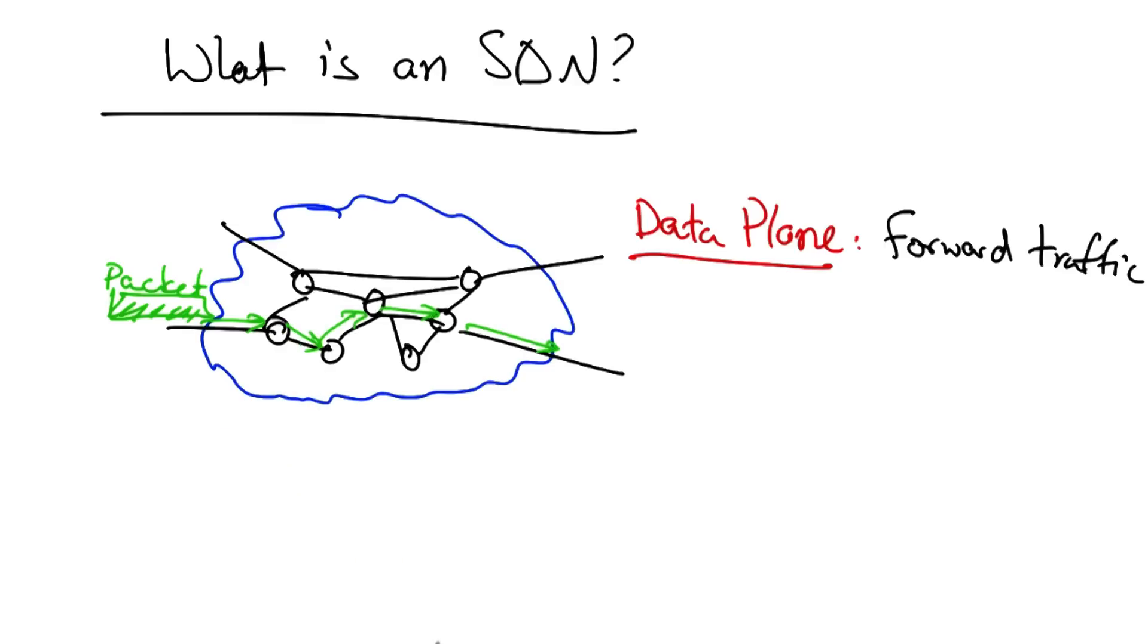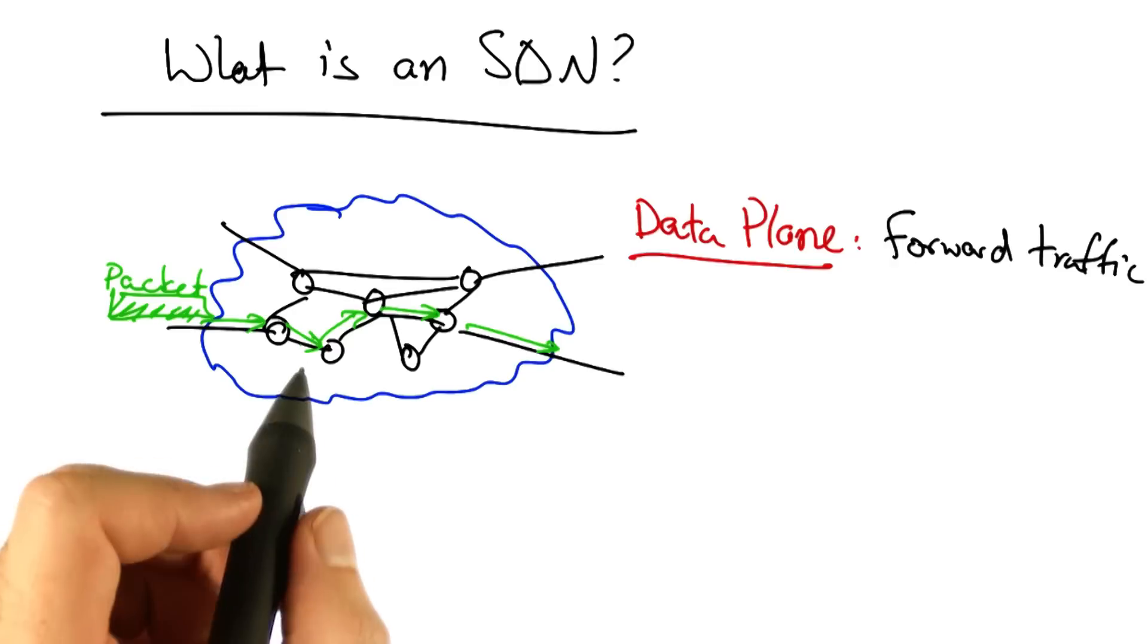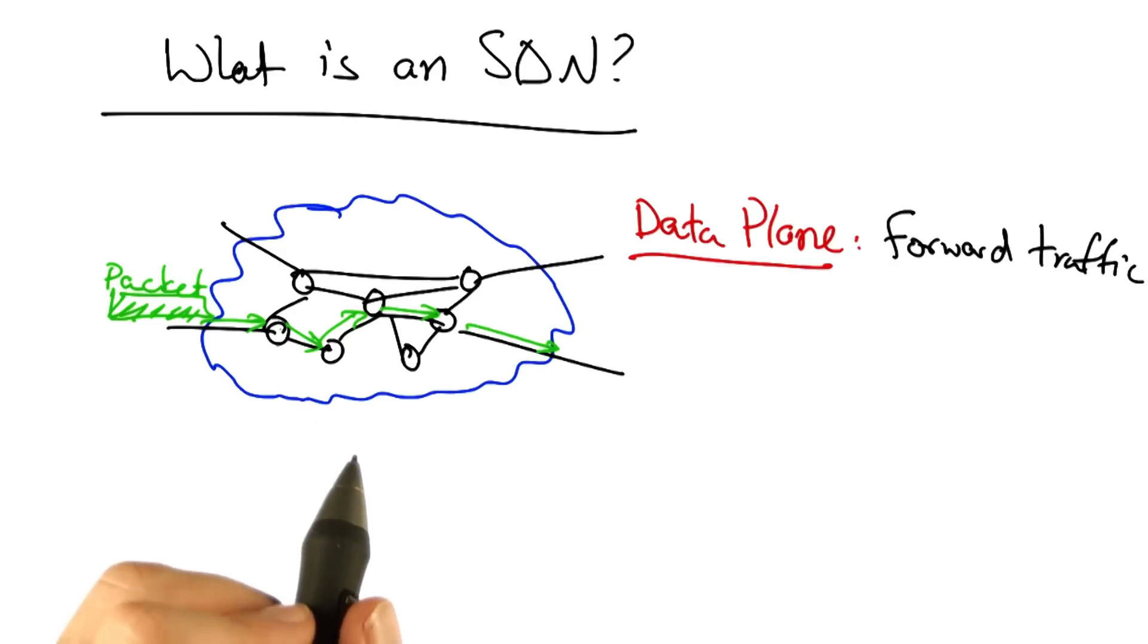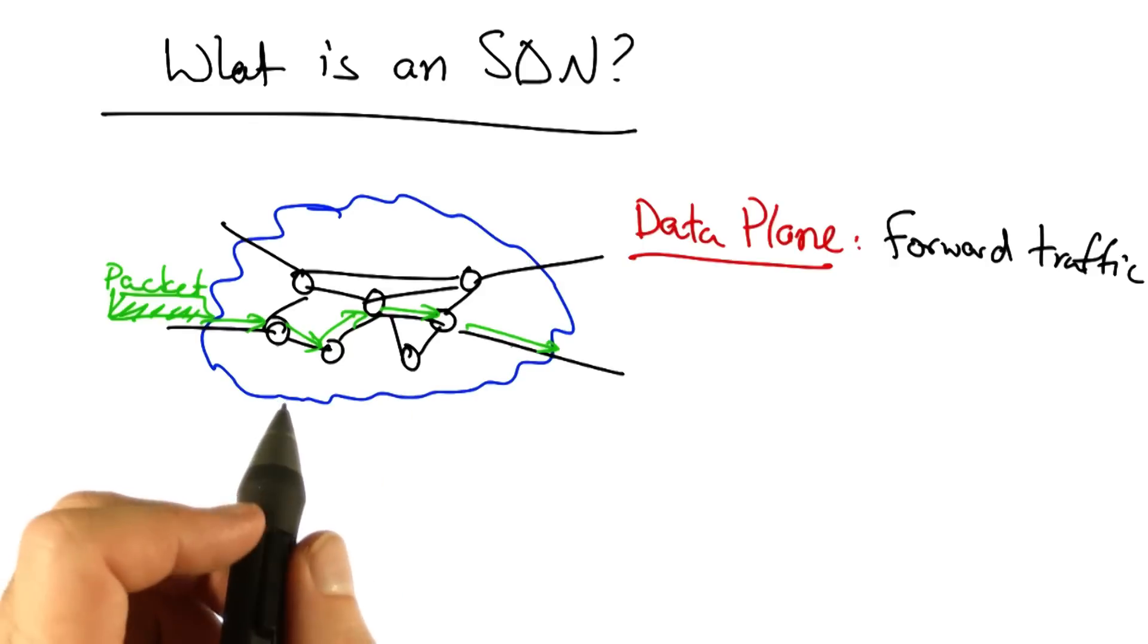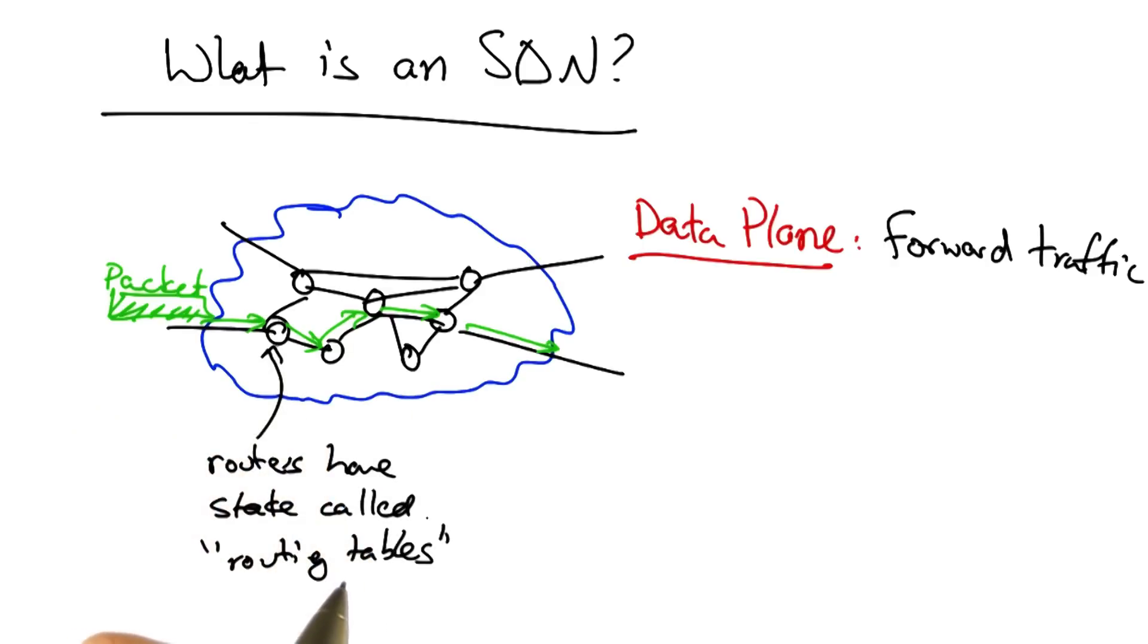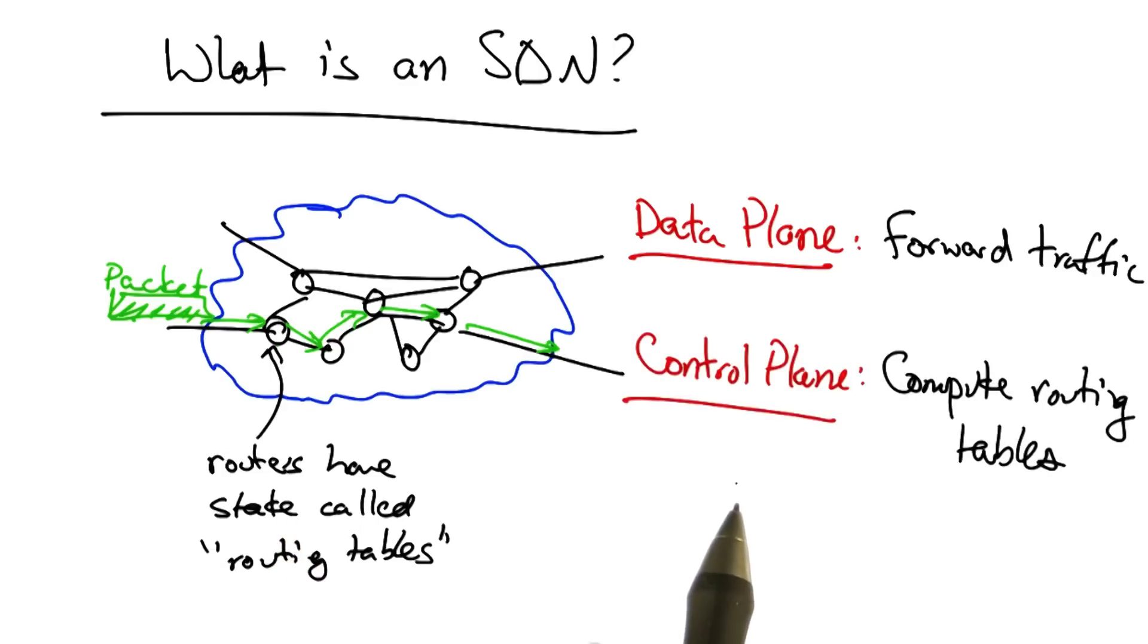But in order for the data plane to work, we also need a way of computing the state that each of these routers has that allows the routers to make the right decision in forwarding traffic to the destination. The state that lives in each of these routers, that allows the routers to make these decisions about how to forward packets, are called routing tables. It's the job of the network's control plane to compute these routing tables.